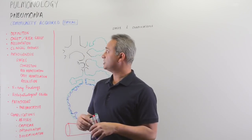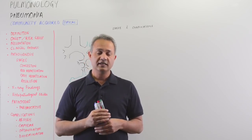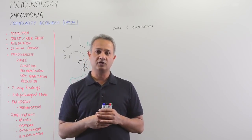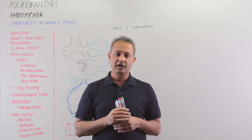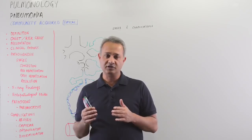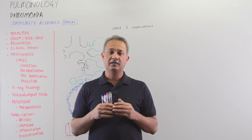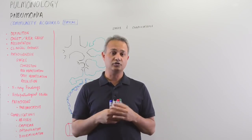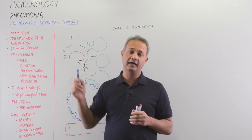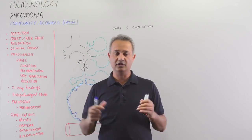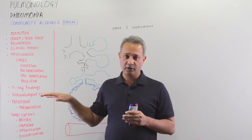This is Mobin and we are talking about respiratory pathology — specifically pneumonias. Today's topic is community-acquired pneumonias. Community-acquired pneumonias are infections of the lung, and they are further divided into two types: typical pneumonia and atypical pneumonia. We are starting with typical pneumonias and then we'll go to atypical as well.